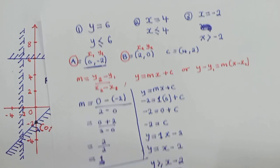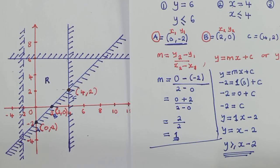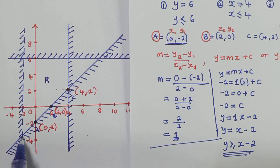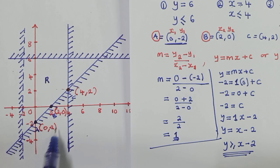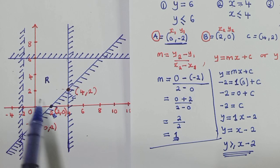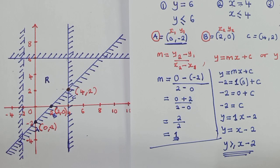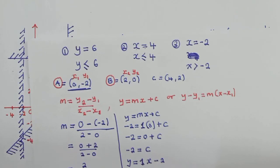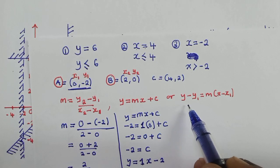How did I know it's 'greater than or equal to'? Looking at the graph, the region is shaded on one side. The unshaded region — which is what we want — is the greater part, which is why I used greater than or equal to.